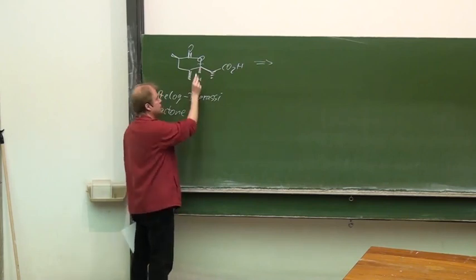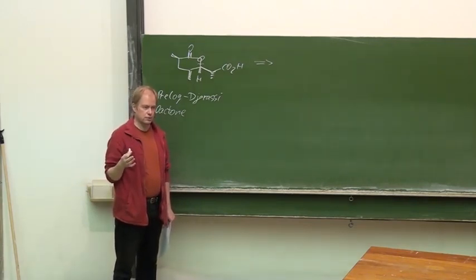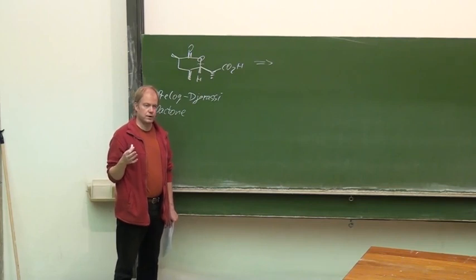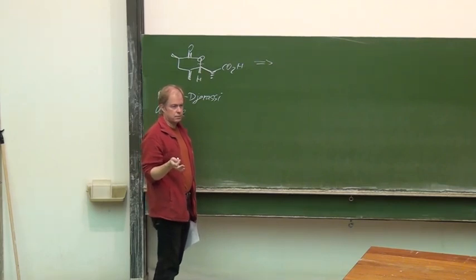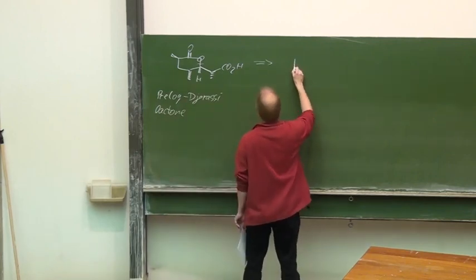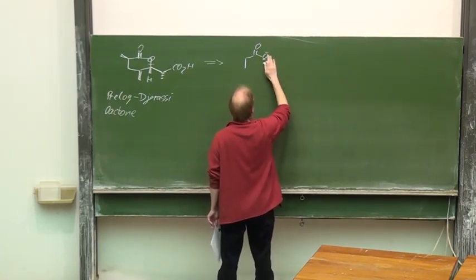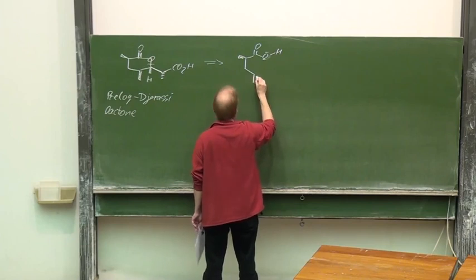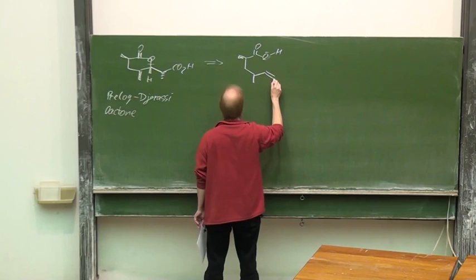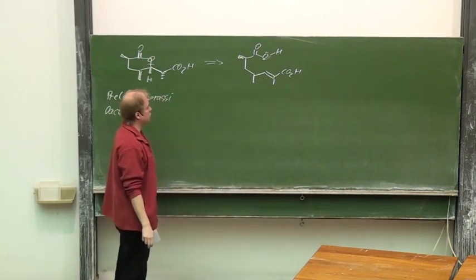We could add a leaving group X at that position, but this would not represent a significant simplification. An acceptor reactivity in beta position of a carbonyl group is easy achieved if we assume that we have an alpha-beta unsaturated carbonyl group there.